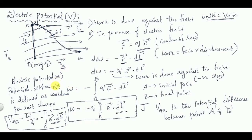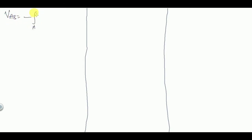Electric potential or potential difference is defined as work done per unit charge — this is the definition of electric potential. So VAB = W/Q = −∫(A to B) Ē·dL̄. VAB is the potential difference between the points A and B. Now we have VAB = −∫(A to B) Ē·dL̄.